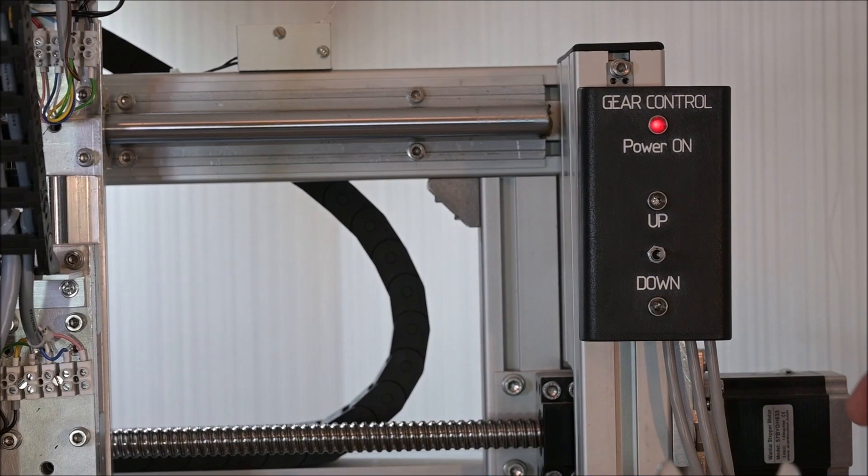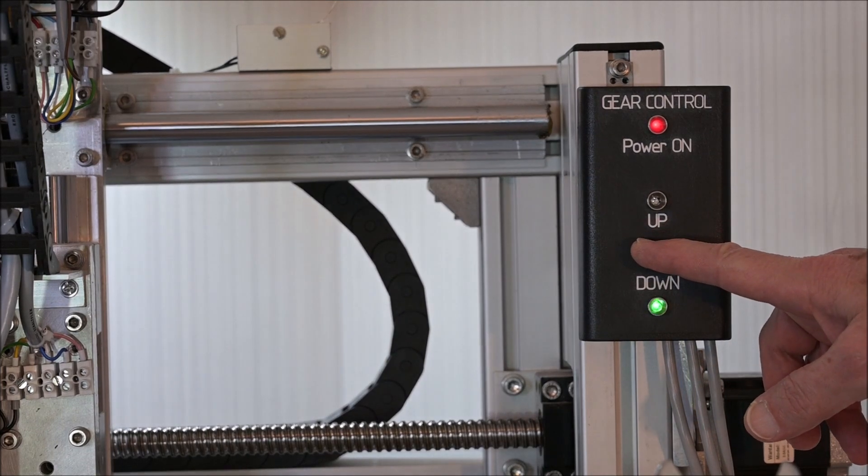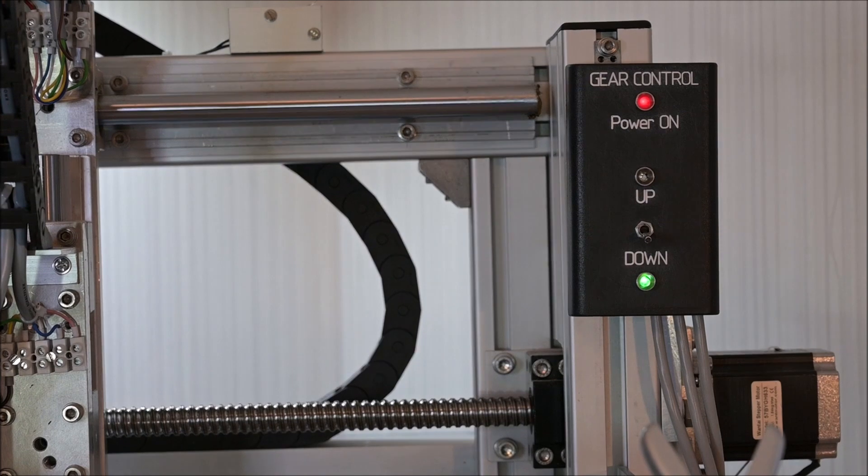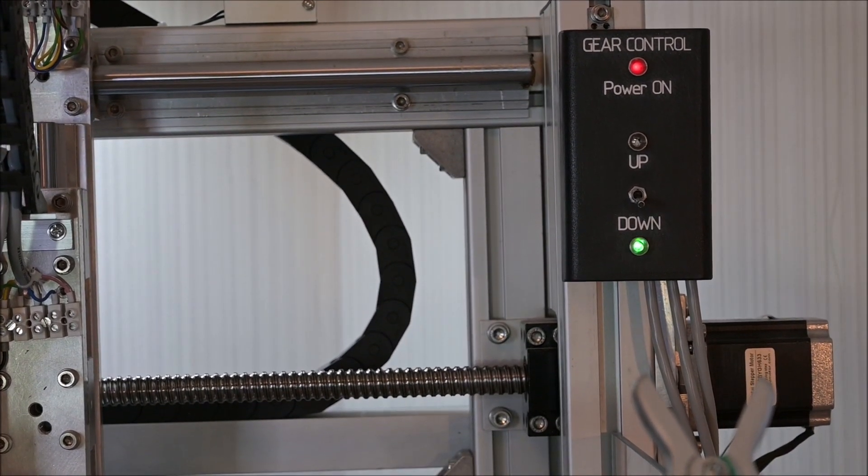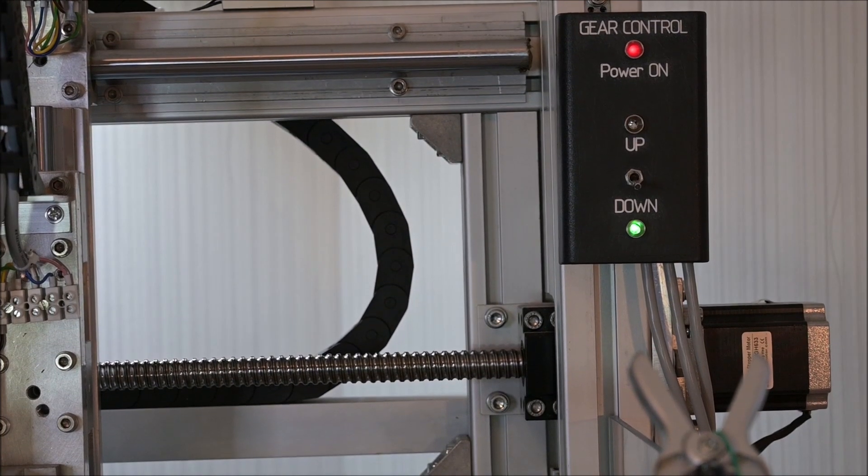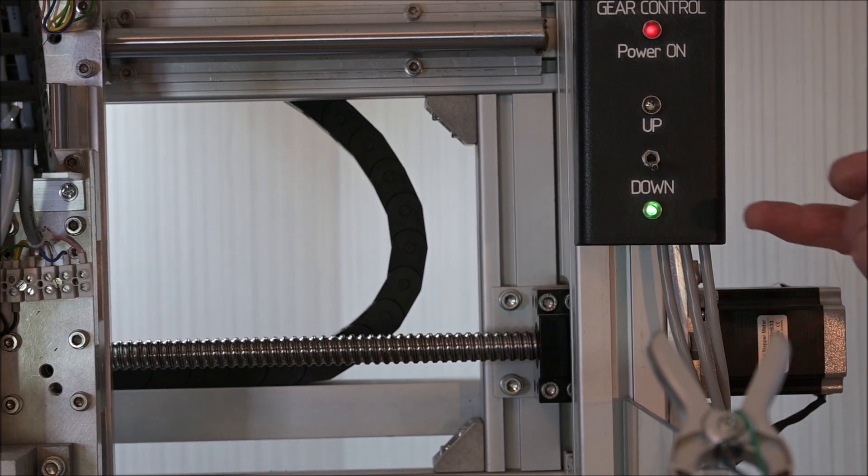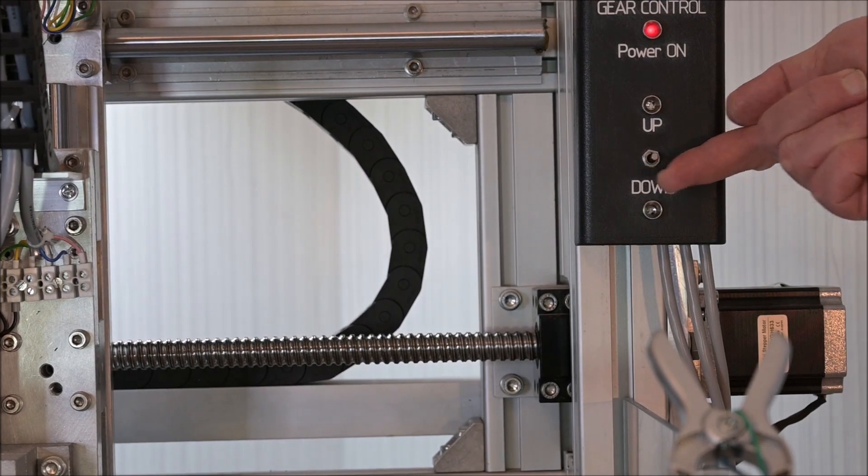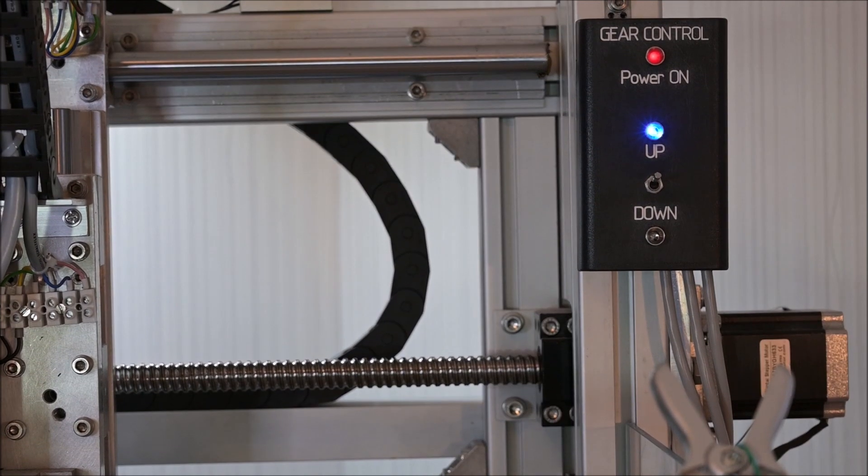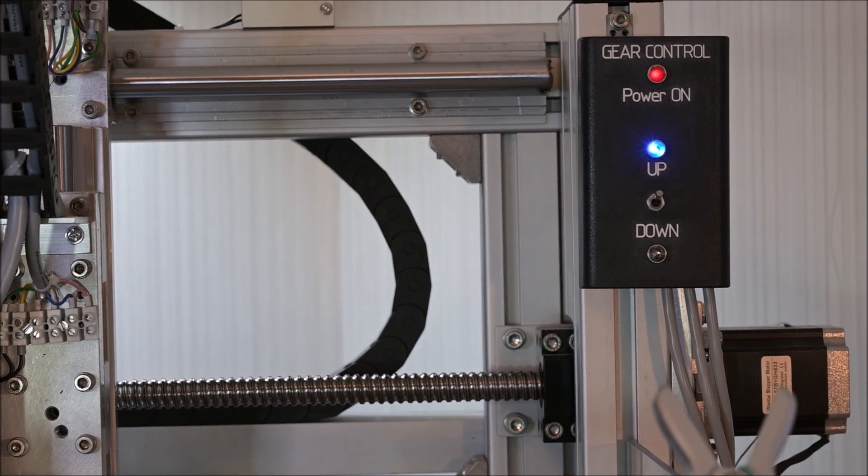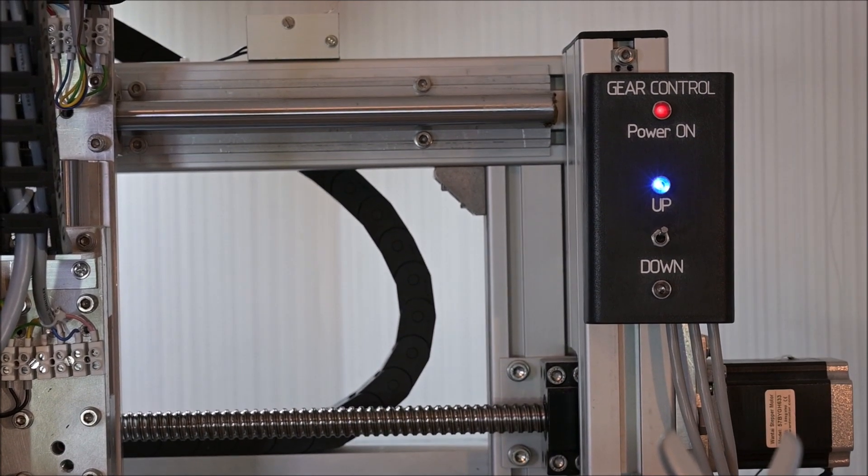This is the actual control box which I have shown in the previous part. Controlling is very easy, it just means flipping a switch up or down depending on if I want to raise the CNC or lower it. The blue LED indicates up as the text says, and the green one down.